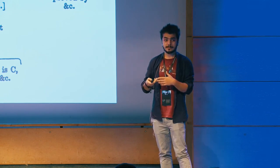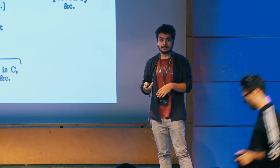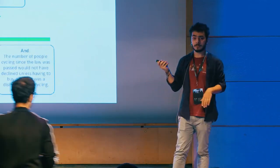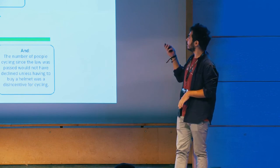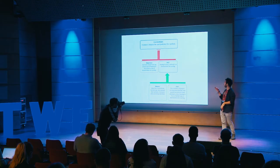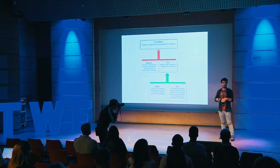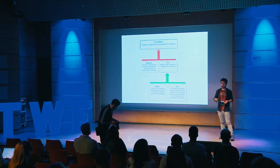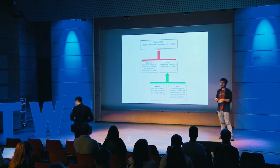Argument maps are a bit further version of this. You have an argument — for example, 'Helmets should be compulsory for cyclists.' Then you are trying to make an objection about this argument, or you are trying to prove this argument in a visual way.